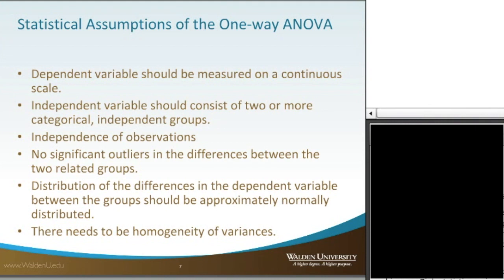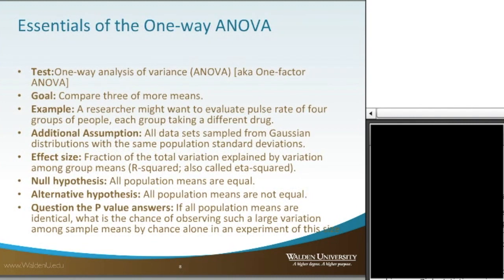If you wind up violating the homogeneity of variances assumption — and in my own experience, this is the one assumption that winds up being violated the most — you'll have to do some exploration to see how to correct or address that. If you have difficulty figuring that out, I recommend contacting your committee chair and methodologist to help guide you through it. The essentials of the one-way ANOVA, also known as a one-factor ANOVA, is the test we're going to discuss today.